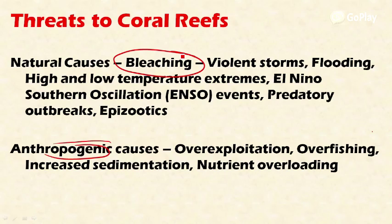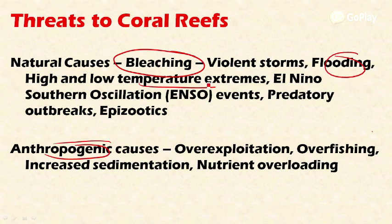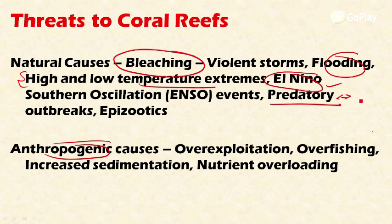Other natural causes for the destruction of coral reefs include violent storms, flooding, and extreme temperatures — both higher and lower temperatures are dangerous for the survival of coral reefs. Global environmental events like El Niño and the Southern Oscillation also cause destruction, as do predatory outbreaks of pathogens that cause disease to the coral polyps.